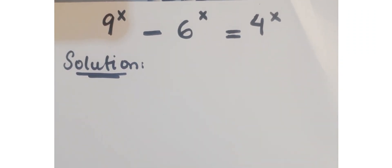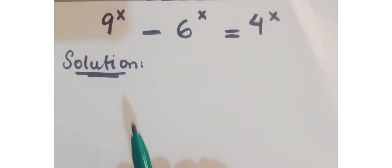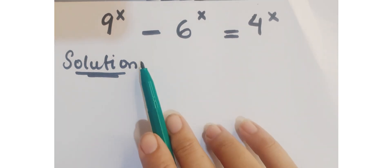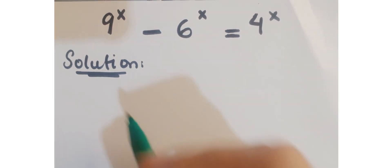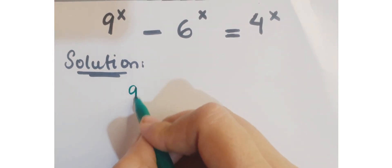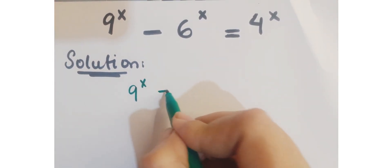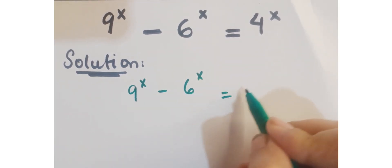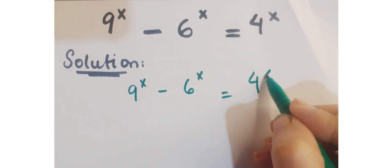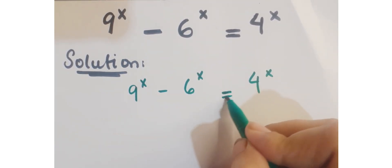Hi guys, look at this question. The question is 9 to the power x minus 6 to the power x equals 4 to the power x, and we have to find the values of x.